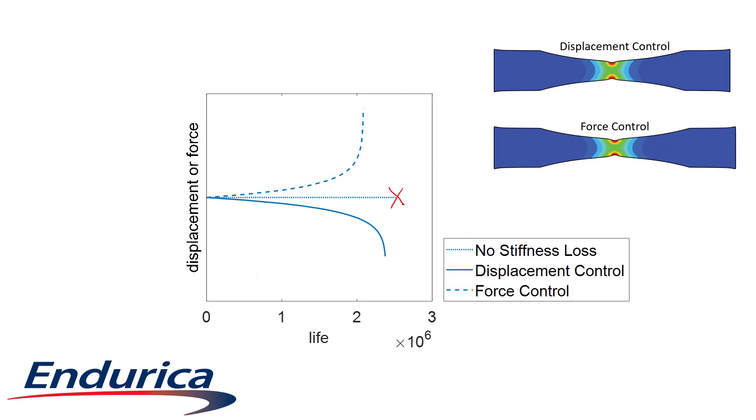For the case where stiffness loss was ignored, the displacement and force are constant during the life. For the displacement-controlled case with stiffness loss, the change in reaction force is plotted over time. Notice how the force decreases as the model loses stiffness.